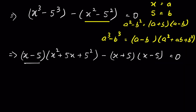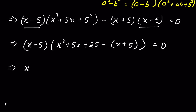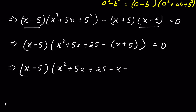Now x minus 5 and x minus 5 is the common factor. So we can write x minus 5, times x squared plus 5x plus 25 minus x plus 5, is equal to 0. That gives x minus 5 times x squared plus 4x plus 20, is equal to 0.